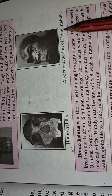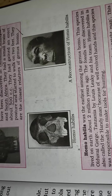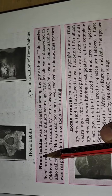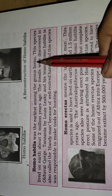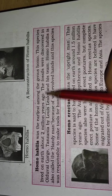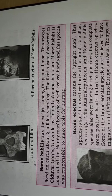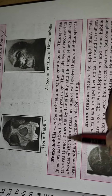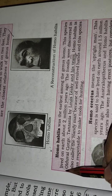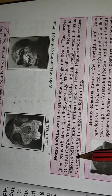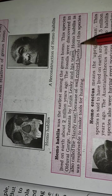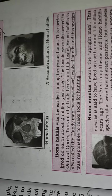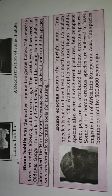Next we have Homo habilis and its reconstruction. According to Darwin's theory, human beings evolved from apes. Homo habilis was the earliest among the genus Homo and lived on Earth about 2 million years ago. The fossils were discovered in Olduvai Gorge, Tanzania by Louis Leakey and his team. Homo habilis is also called 'Handy Man' because they had well-evolved hands and were responsible for making tools.